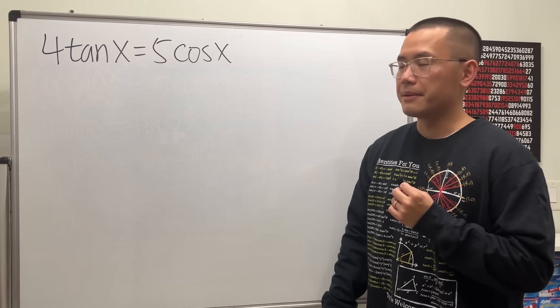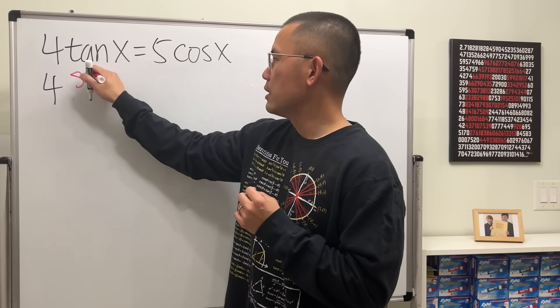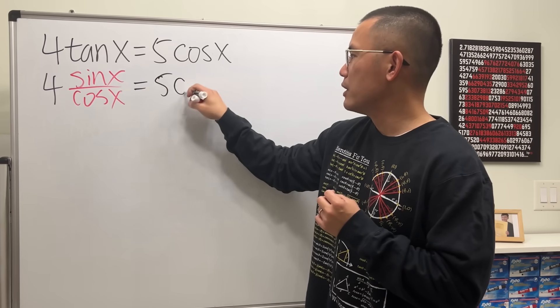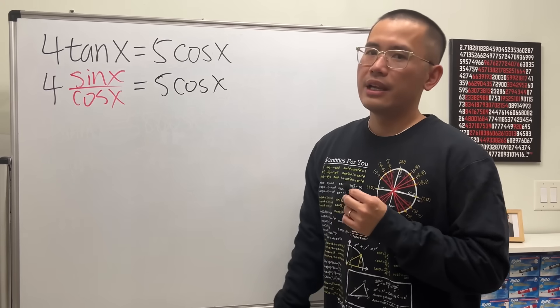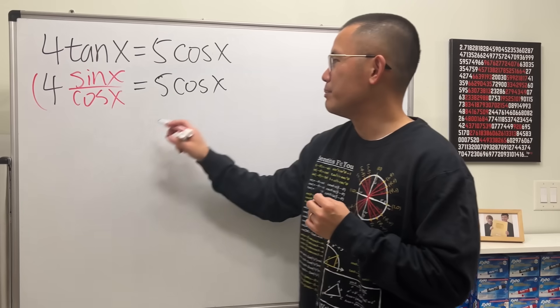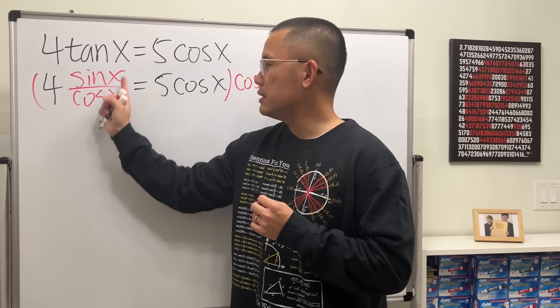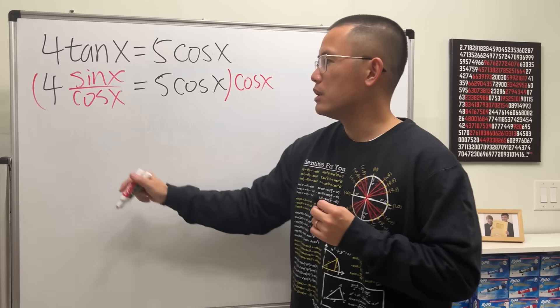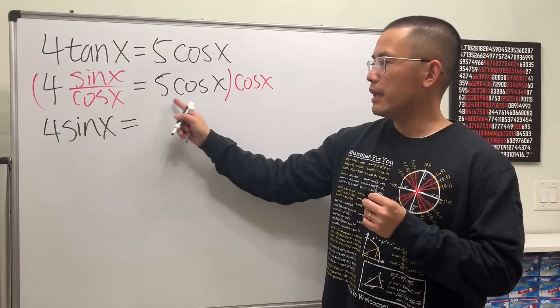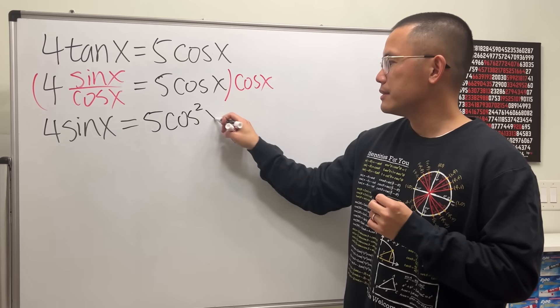Let's do the usual business. Keep the 4, but change the tangent to sine x over cosine x, and then keep the 5 cosine x. Now we have this equation with a denominator. Let's multiply everybody by that denominator so that when we do this times this, the cosine x will cancel, and we will have 4 sine x. Multiply this and that, we will have 5 cosine squared x.